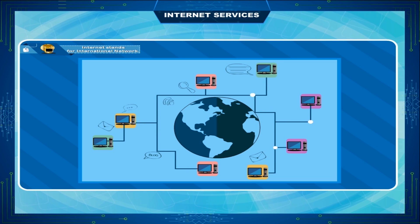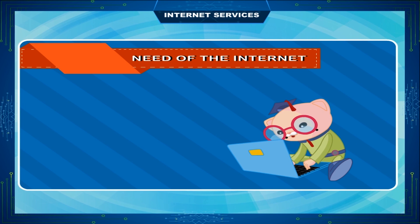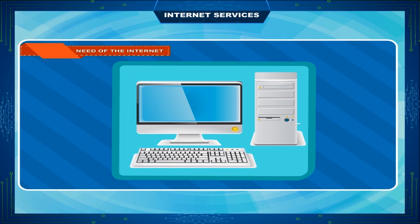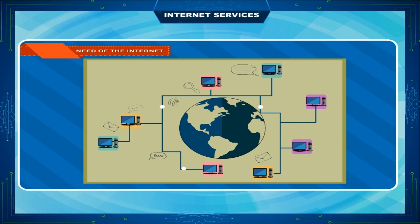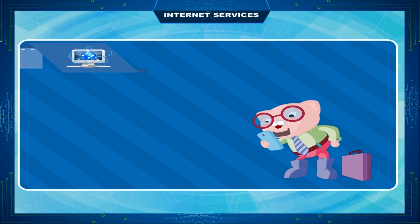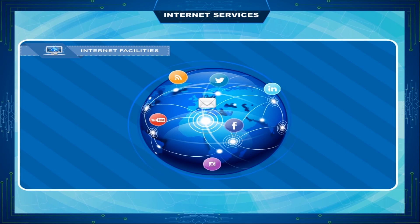Internet is the worldwide network that links together millions of computers. When we are working on a single computer, we are unable to share any information from any other computer. To make it possible to share data and information, we connect the computers through a network. When the computers are connected to networks around the globe, it is called the internet.